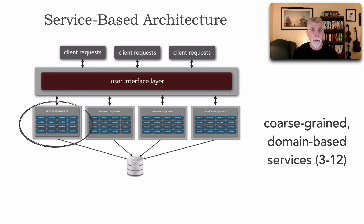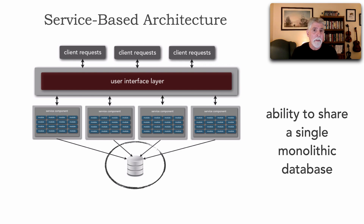Service-based architecture does have services, but these are very coarse-grained services. The functionality in each service really represents all the functionality for that particular domain — that large thing the application does. Because of this, we have anywhere between three and twelve services within service-based architecture. And because of that small number of services, we can actually share a single monolithic database.